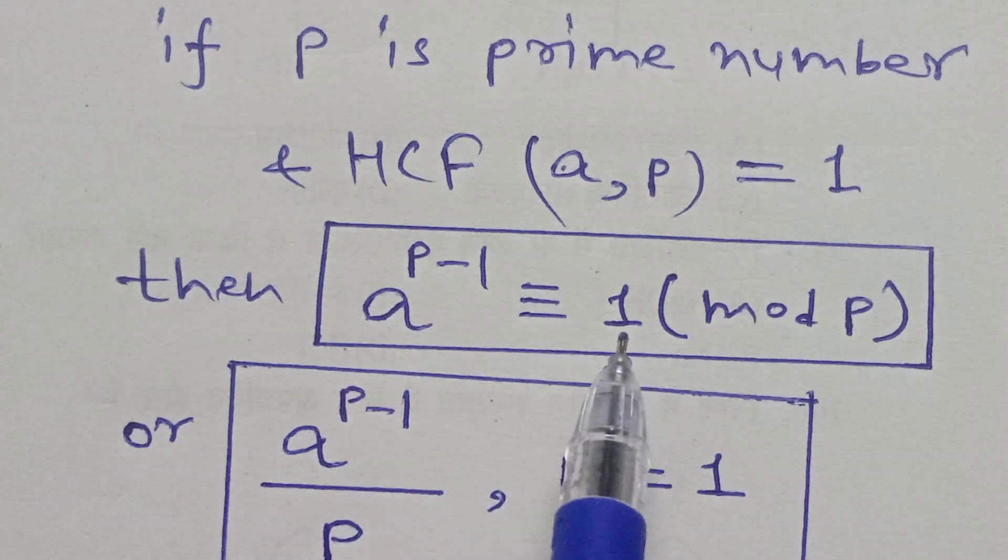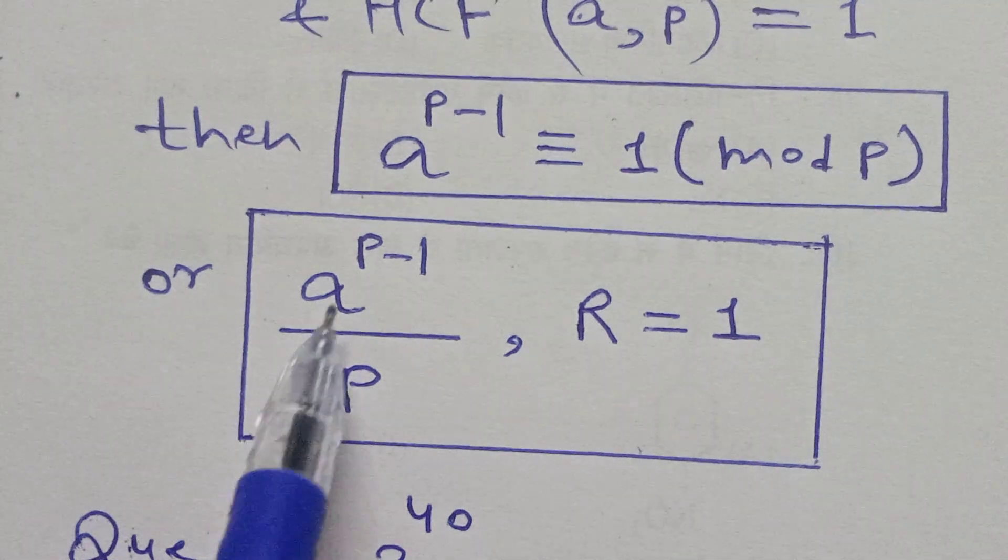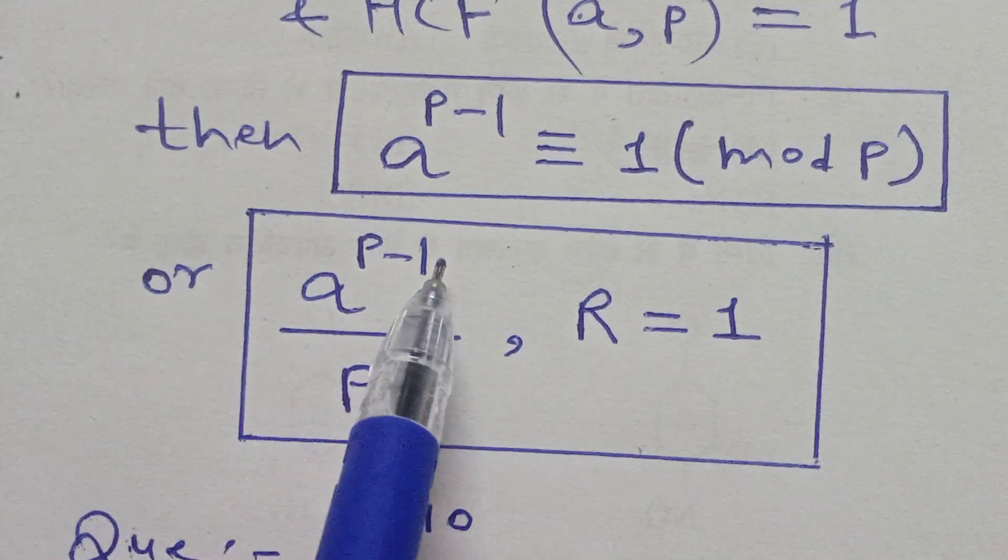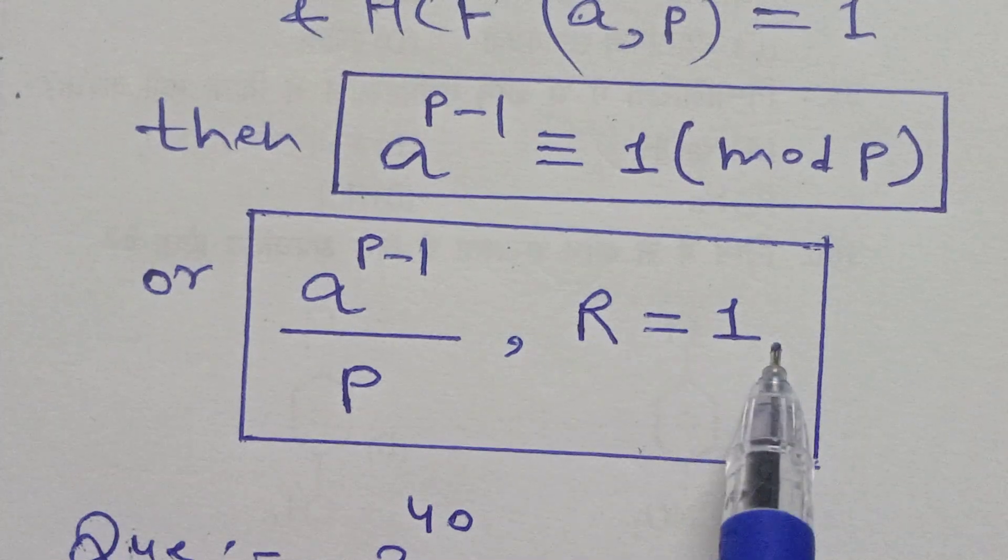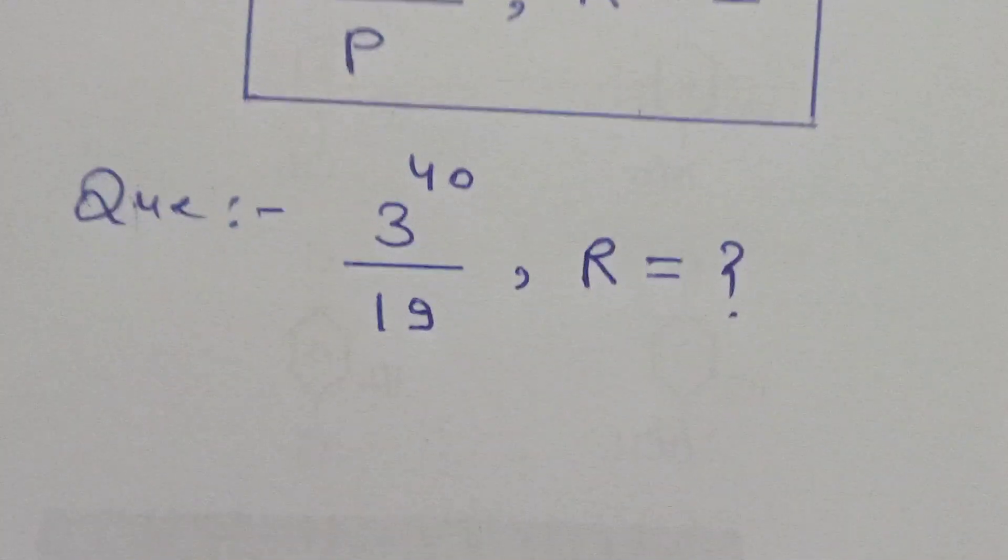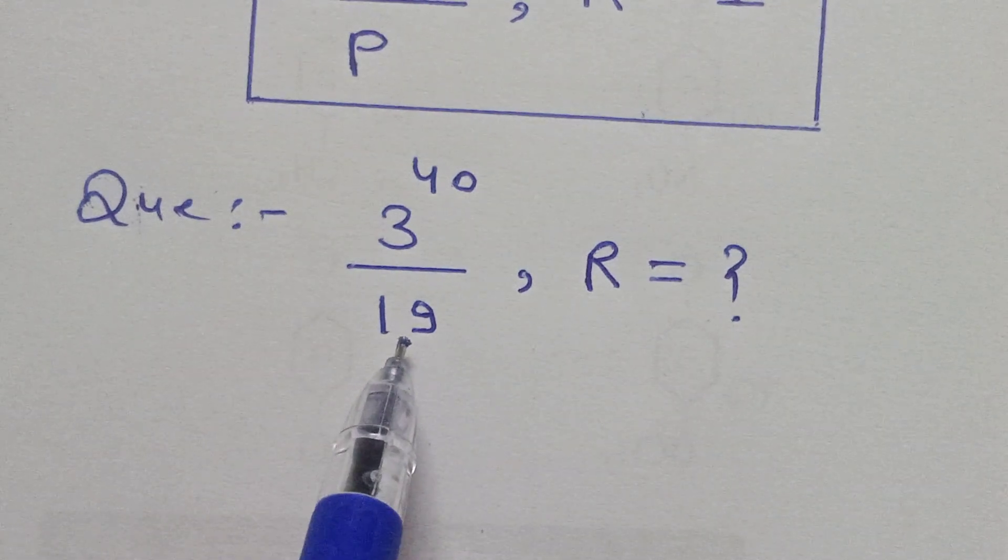It can be written as: if a to the power p minus 1 is divided by p, then remainder will be 1. So therefore we have a question here - 19 is a prime number.